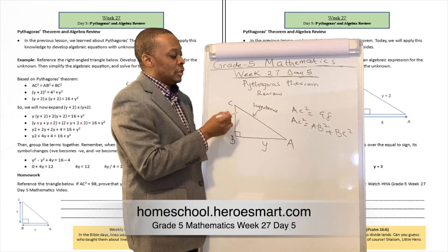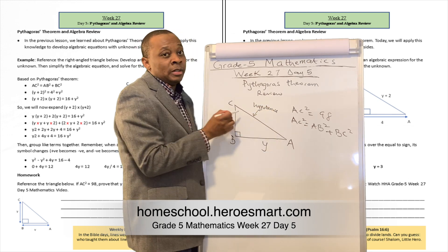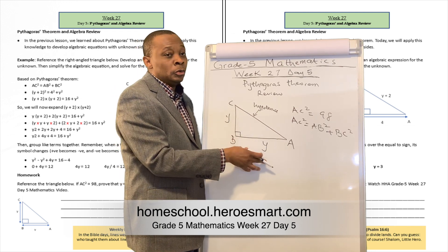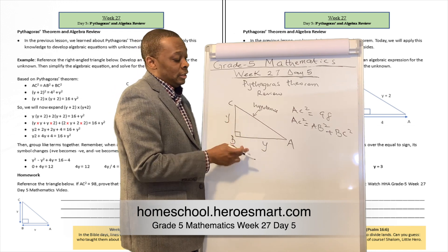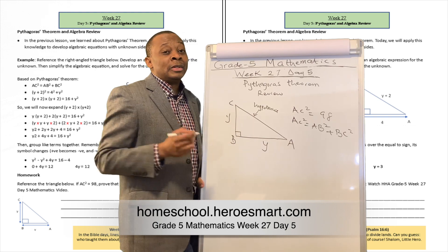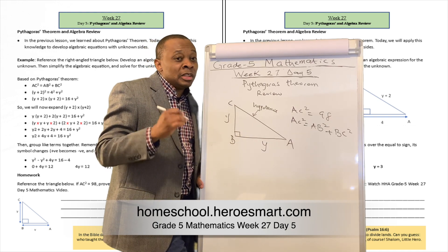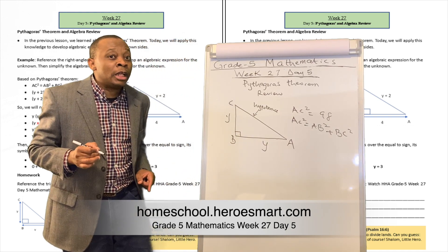This is called a hypotenuse. The line that connects the height and the side together is called the hypotenuse. So we want to use a formula to determine that hypotenuse.